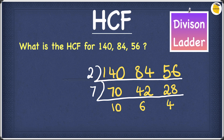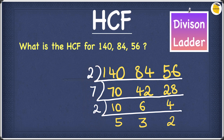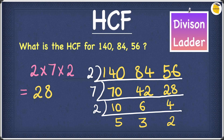We can still find a common factor between 10, 6, and 4. The common factor is 2: 2 goes into 10 five times, into 6 three times, and into 4 twice. We cannot find a common factor anymore, so we stop here. To find the highest common factor, we multiply the numbers on the left-hand side: 2 times 7 times 2. 2 times 7 is 14, and 14 times 2 is 28. So the HCF for this question is 28.